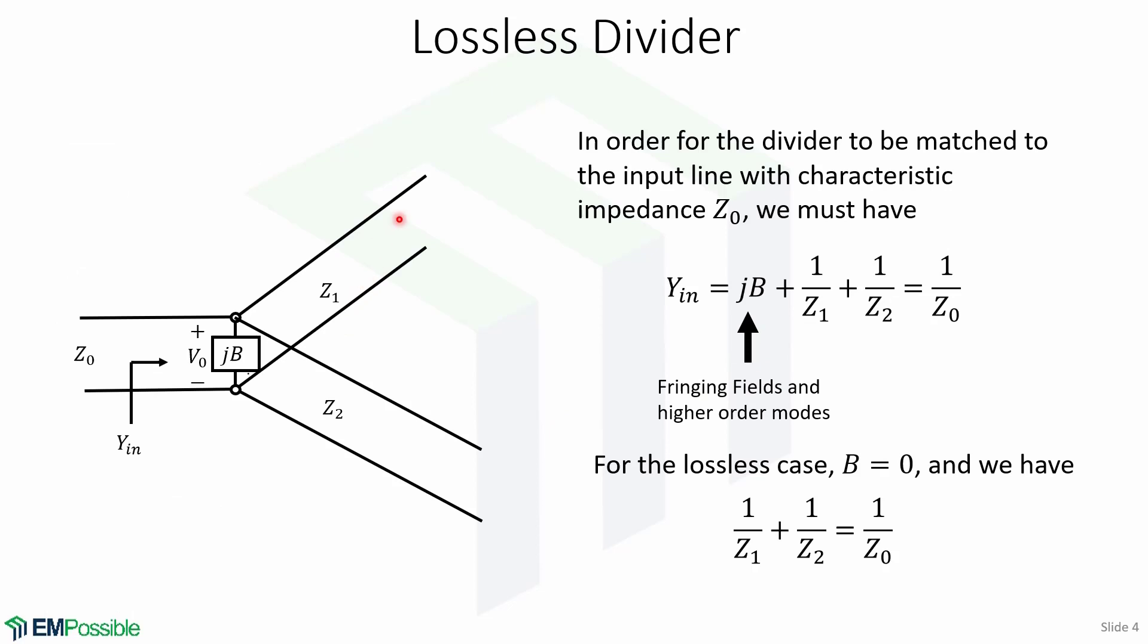In order for the divider to be matched to the input line with characteristic impedance Z0, we must have that the input admittance equals the susceptance associated to fringing fields and higher-order modes plus 1 over Z1 plus 1 over Z2 equal to 1 over Z0.